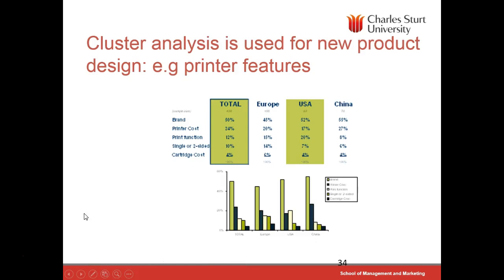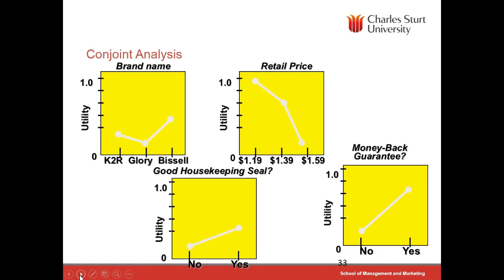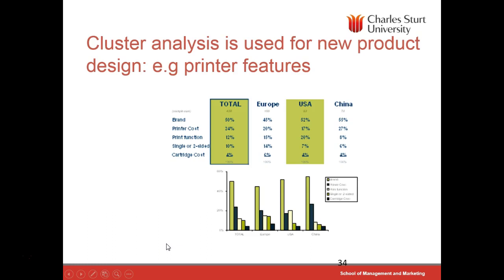Once you gain information about attributes, you can use cluster analysis or look at different regions. Here's an example from research online looking at differences in attributes of printers across a number of markets. Compared to China and the USA, printer function is much more important in the United States, whereas brand name and cost are more important in China.